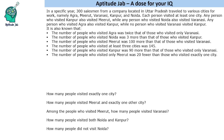Hello everyone, welcome to AptitudeJab. This is a set based on Venn diagrams wherein you need a 5-set Venn diagram.